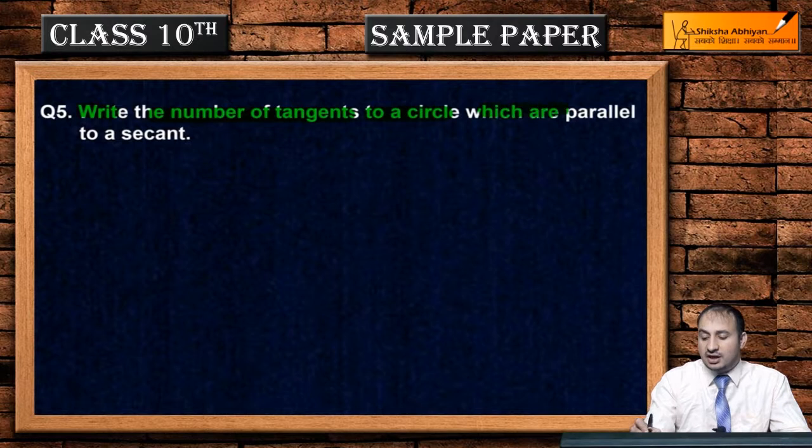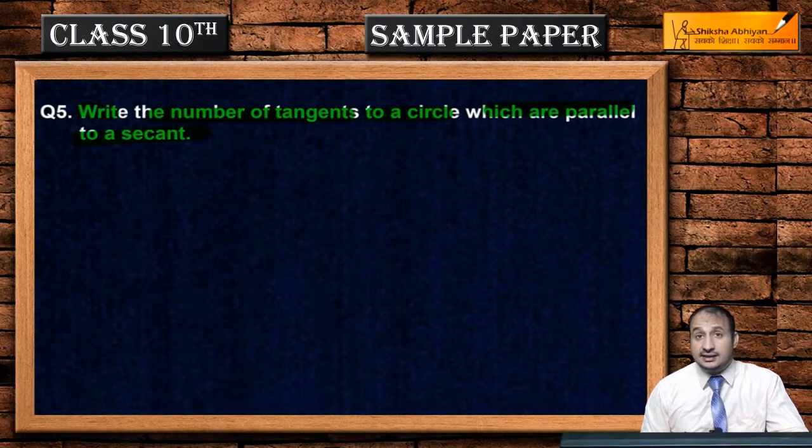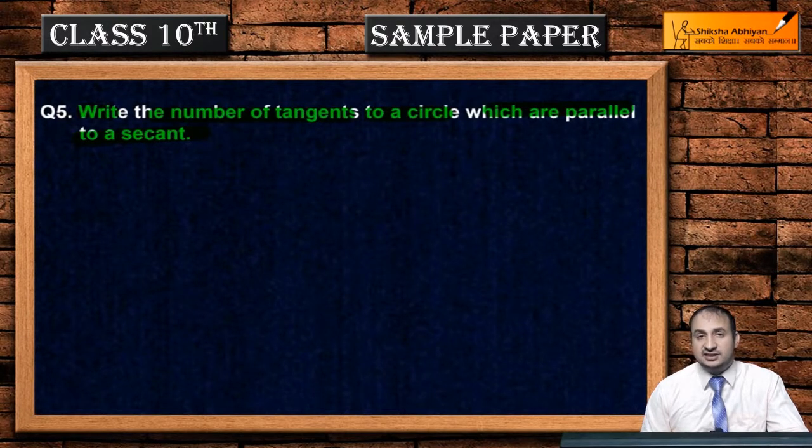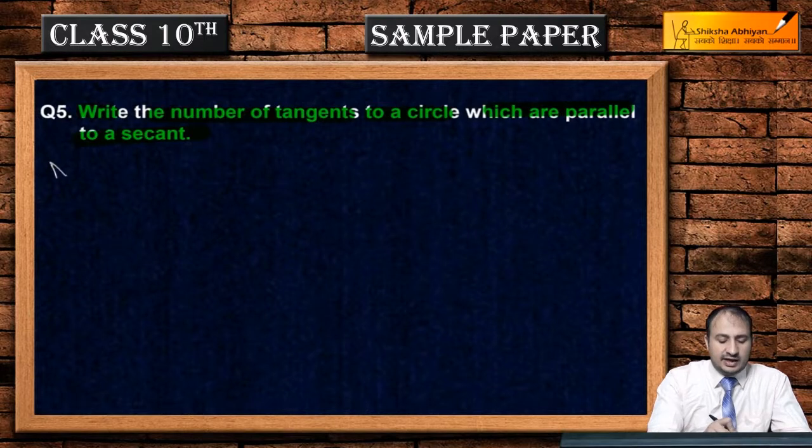Se pahle, mein aahan pa leeta hoon, to yeh circle, ab iski ek secant will secant lelete hoon, say b, to yeh AB mein leeta hoon. Iske parallel, ap kitnye parallel only two tangents, iaset possible hai, see koi batata hoon.